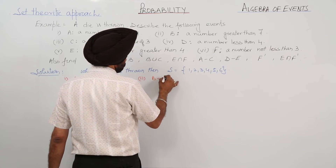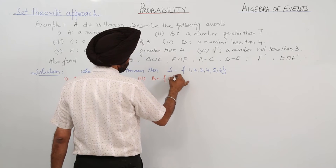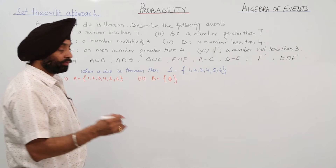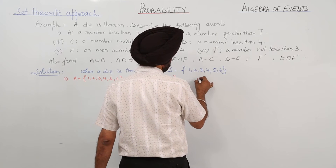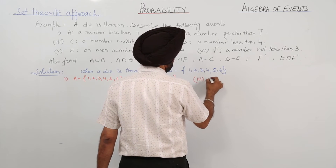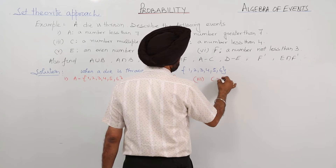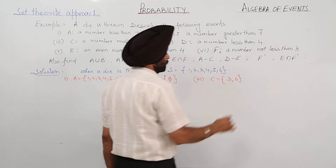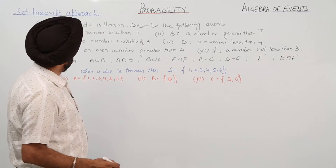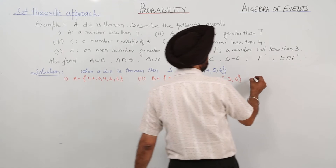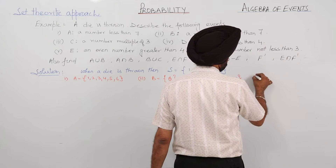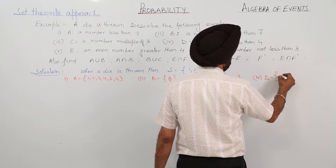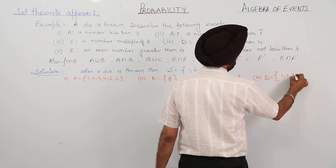So set B will be empty (∅). Then C: a number multiple of 3 — C is equal to {3, 6} only. Then D: a number less than 4, that is {1, 2, 3}.